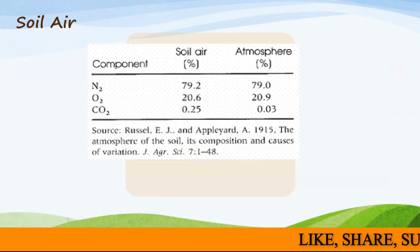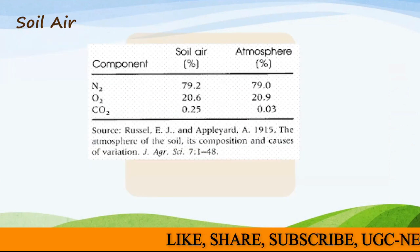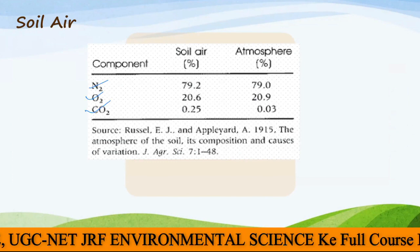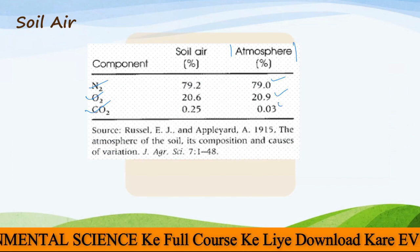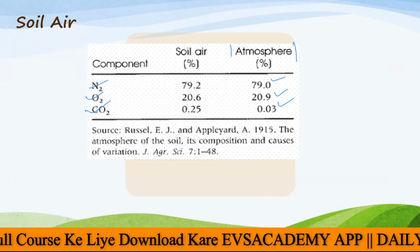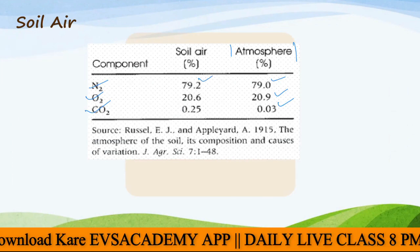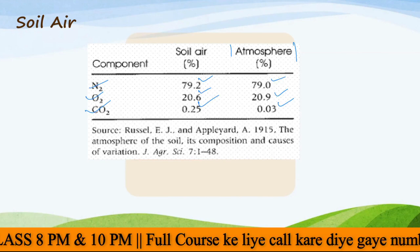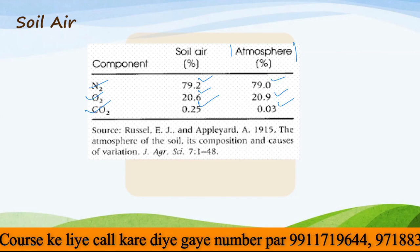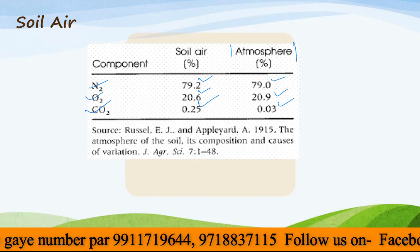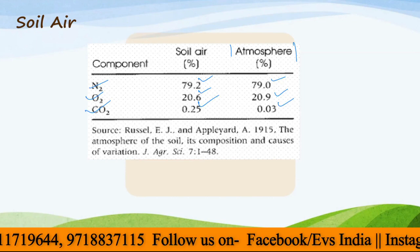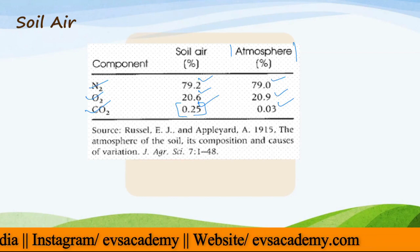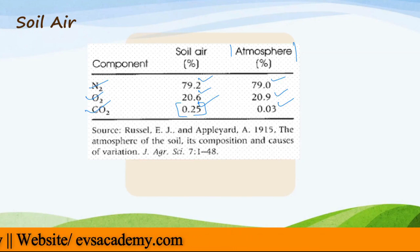Next, soil air. In soil air, we mainly have N₂, O₂, and CO₂. Atmospheric percentages are approximately 79%, 20.9%, and 0.03% respectively. In soil air, nitrogen availability is almost the same at 79.2%, oxygen is slightly less at 20.6%, but carbon dioxide is very high — up to 0.25%. The reason is the presence of aerobic microorganisms that continuously use the oxygen in the soil and produce carbon dioxide through respiration, which is why CO₂ percentage in soil air is highest.